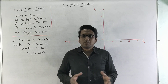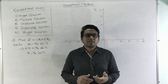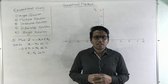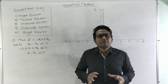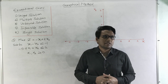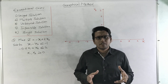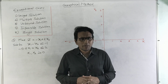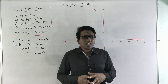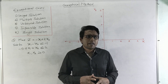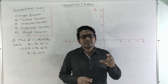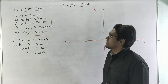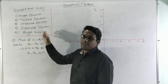Hi everyone, I'm Shadab Imam and we are continuing our lecture series on operations research. Those who are new to the channel, please subscribe and don't forget to hit the bell icon. Today we are going to study the exception cases that arise in the graphical method. In previous lectures we have already completed the formulation of linear programming problems and seen how to solve LPP by graphical method in five easy steps. There are five types of exception cases.